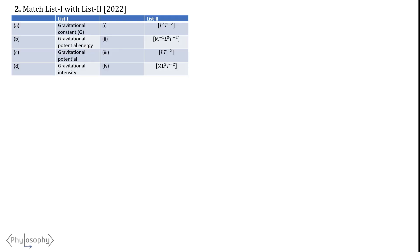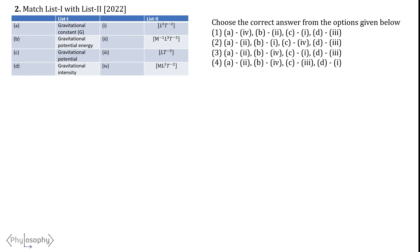Our next problem is to match list 1 with list 2. In list 1, four physical quantities are given, and in list 2, four dimensional formulas are given. We have to choose the correct answer from the options given. Let's consider the first physical quantity, which is the gravitational constant — a constant relating the force of gravitational attraction between two bodies to their masses and distance in Newton's law of gravitation.